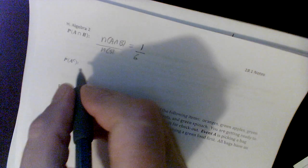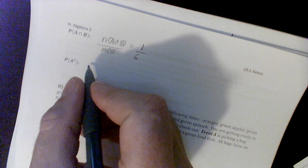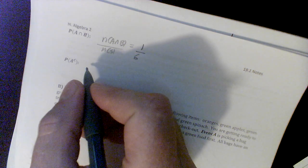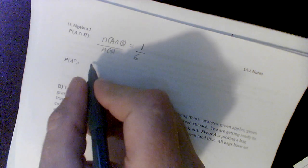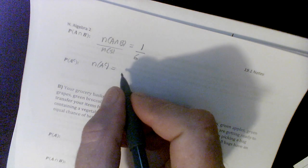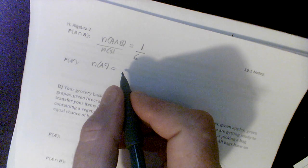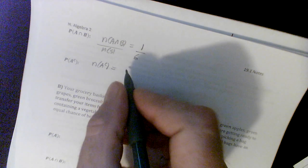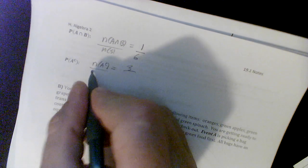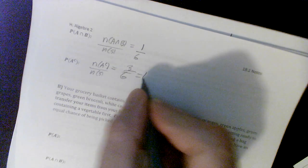This is the probability of A's complement. A's complement is not prime numbers, and the number of A's complement is 4, 6, and 1, so there's 3 outside, and the sample space is still 6, so this is 1 half as well.